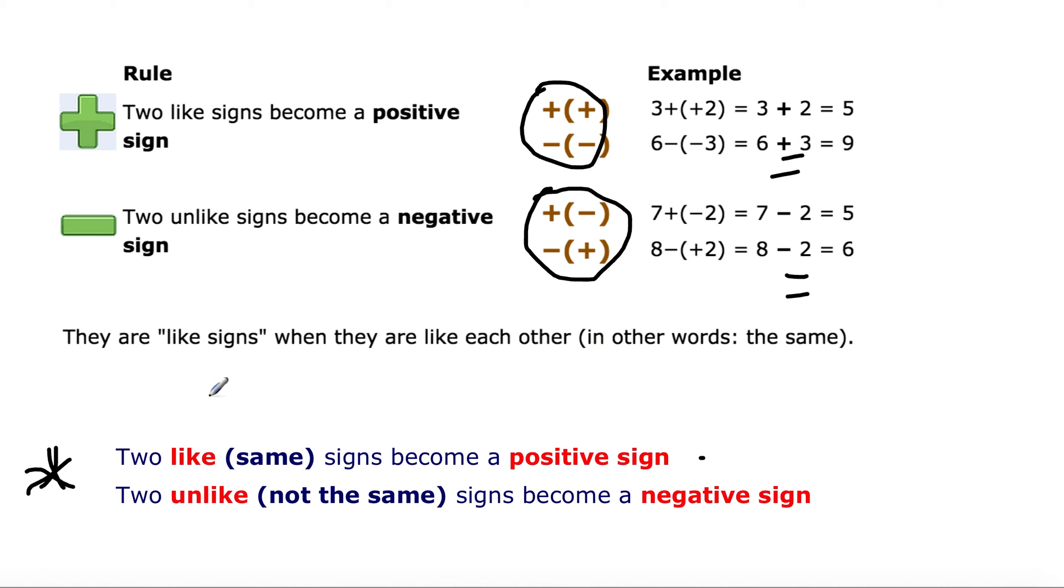Very simple stuff. So like signs, or like saying, are when they are like each other. In other words, they're the same. Simple stuff. So what you need to remember is this. Two of the same signs become positive. Two unlike signs becomes negative. It's like adding, like subtracting. Any questions? We'll address. Pretty straightforward. Take all this down. Go back and re-watch and take all these examples down. We're going to need it going forward. Thanks for watching. We'll talk.